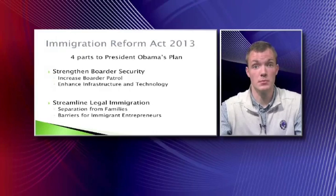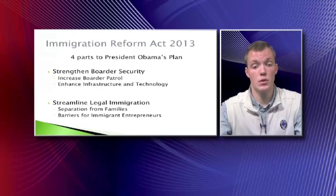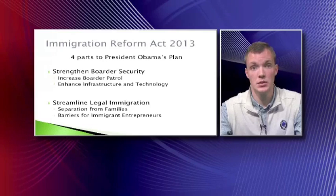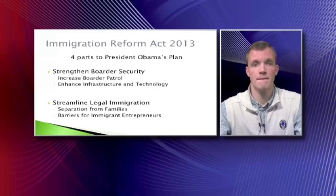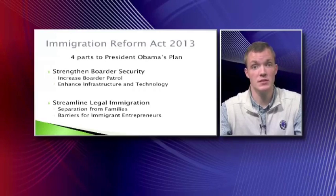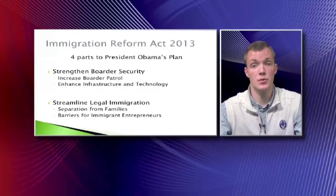The second part of President Obama's plan is to streamline legal immigration. Oftentimes families are split, and President Obama wishes to keep families closer together. By doing so, this will raise the existing country cap from 7 to 15 percent, increasing the number of legal citizens coming into the United States. Currently there are many barriers for immigrant entrepreneurs to become U.S. citizens and create businesses, and the President's proposal would allow those entrepreneurs to attract U.S. financing.